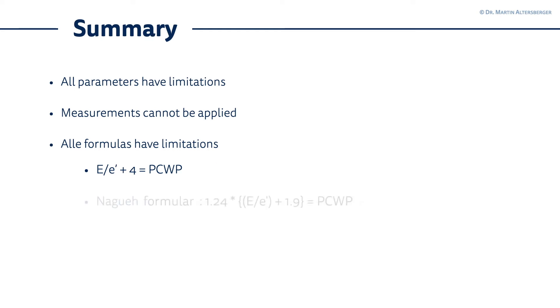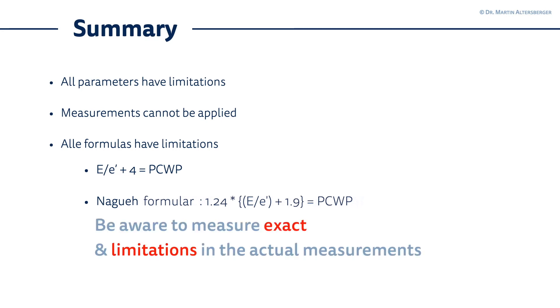Another formula is the so-called Nagueh formula, which is 1.24 × (E/E') + 1.9 = PCWP. You see that this formula is already rather complicated, so you have to be aware that you really have to measure exact and that there are also limitations in the actual measurements that you can acquire.